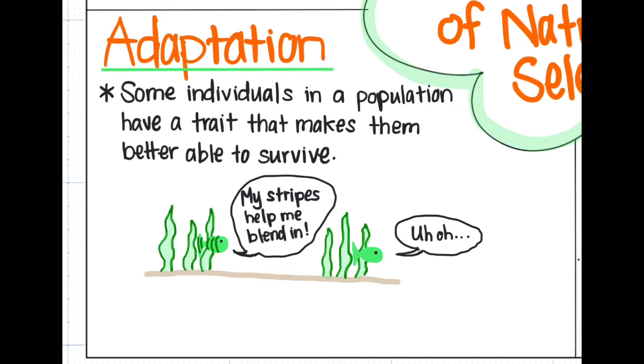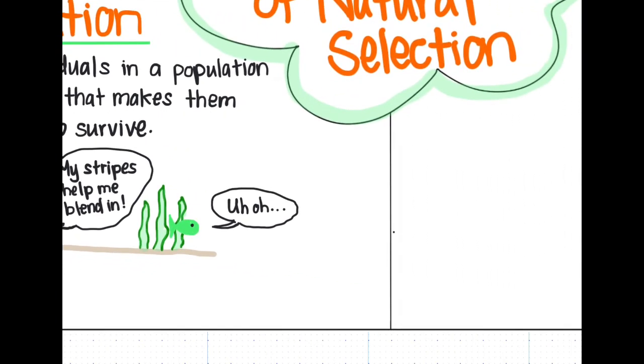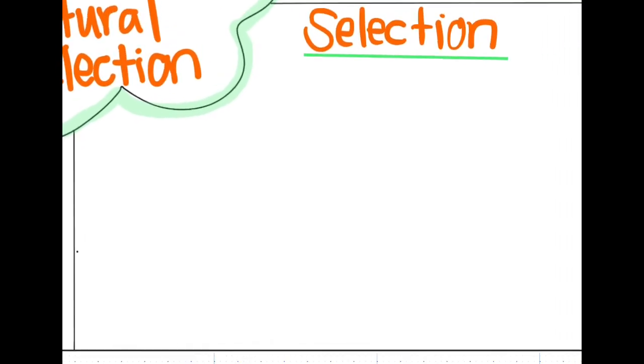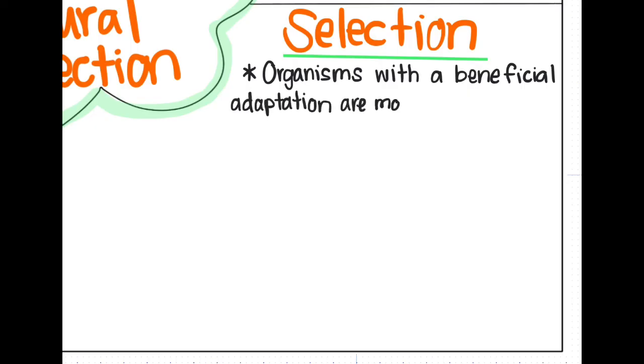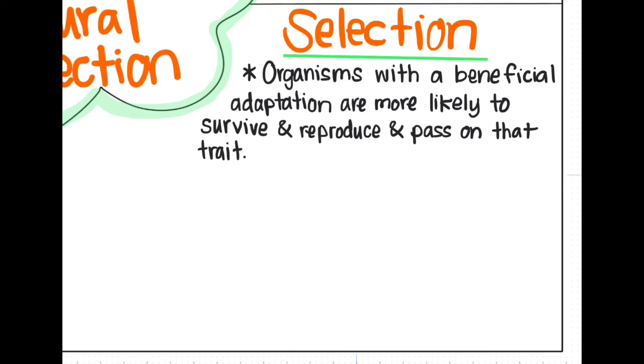And on to our last principle of natural selection: selection. Selection is the concept that organisms with a beneficial natural adaptation, like Jerry and his stripes, are more likely to survive and reproduce and pass on that trait. If an organism is more likely to survive longer, then it's more likely to have offspring. If it has offspring, then it could pass on its traits to its offspring. Therefore, their traits are likely to become more common in the population.